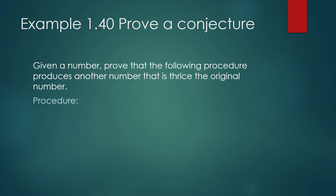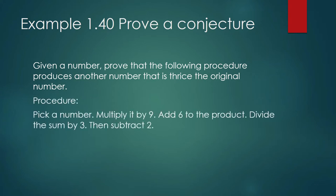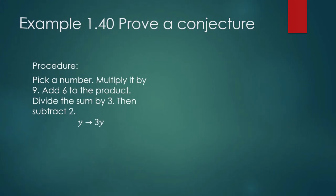This is the procedure: pick a number, multiply it by 9, add 6 to the product, divide the sum by 3, then subtract 2. What this is saying is if you were to do that procedure, whatever number you chose at the beginning, the procedure will transform that number to thrice the original number. So it's going to be from y, the output of the procedure is 3 times y.